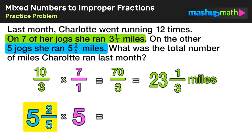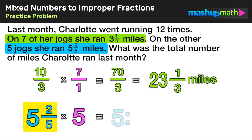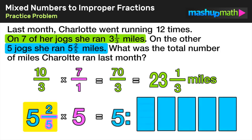Now we want the total miles run on the other five jogs. We do the same thing with five and two-fifths — convert that mixed number to an improper fraction. We take the whole number five and express it in terms of fifths, the denominator of the fraction. Think of five as five wholes and divide each of those into fifths.